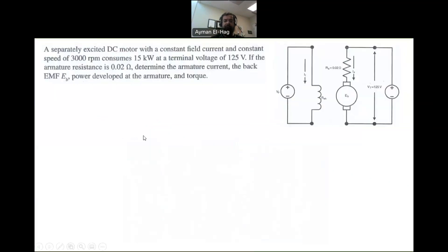So in this question, we have a separately excited motor. What do you mean by separately excited? It means that the field winding is excited by one voltage source, and the armature is also excited by a different voltage source. So this is what we call separately excited.